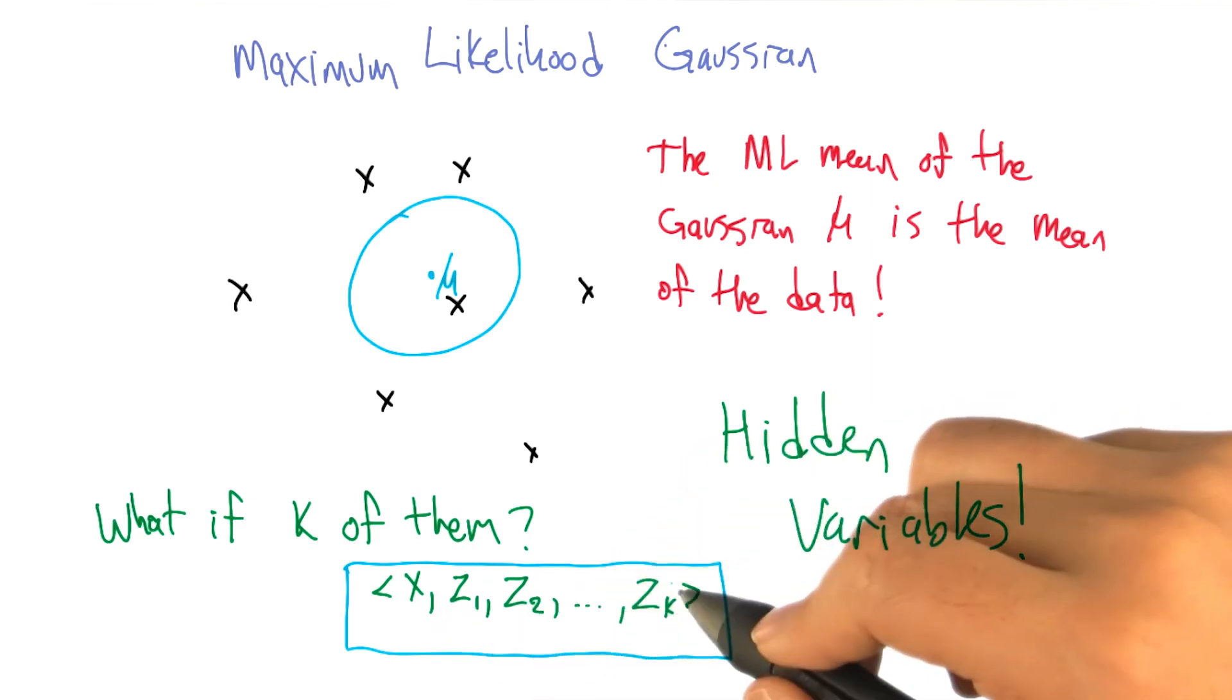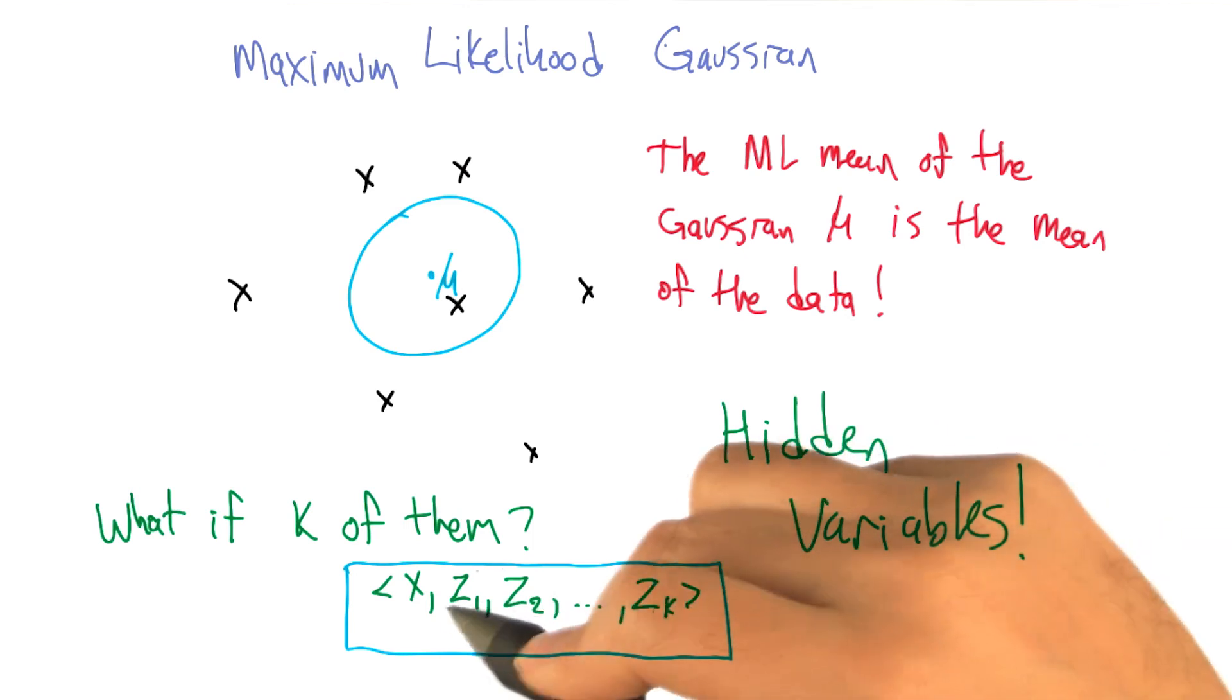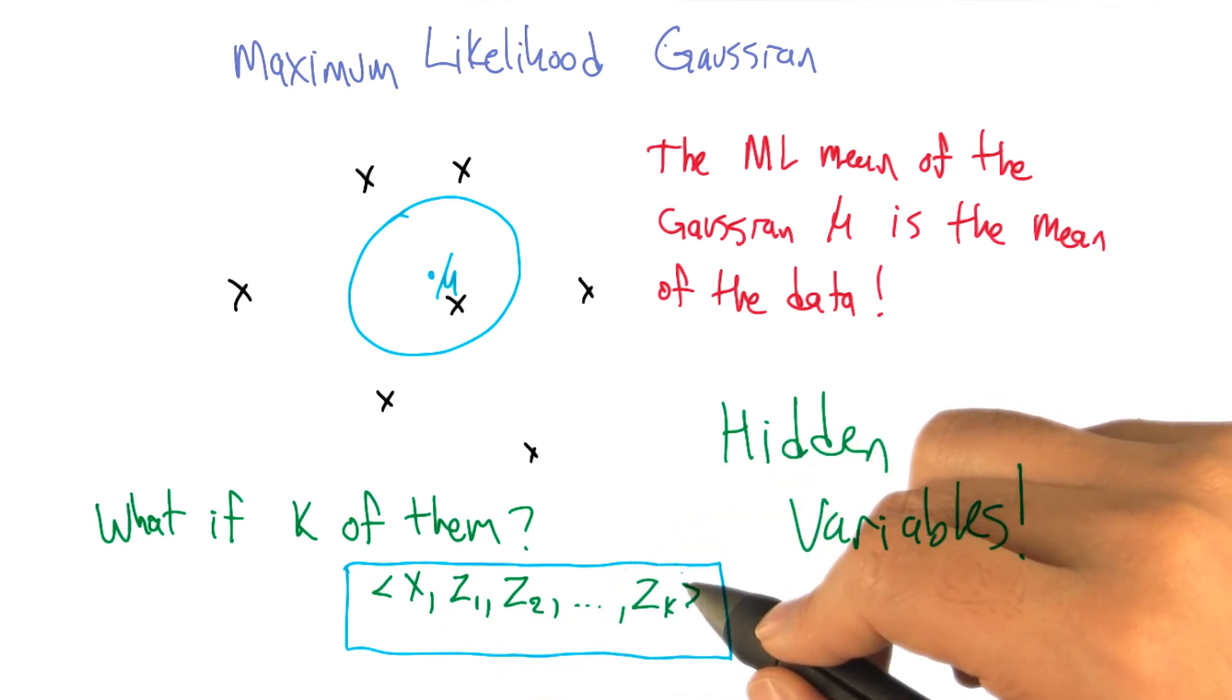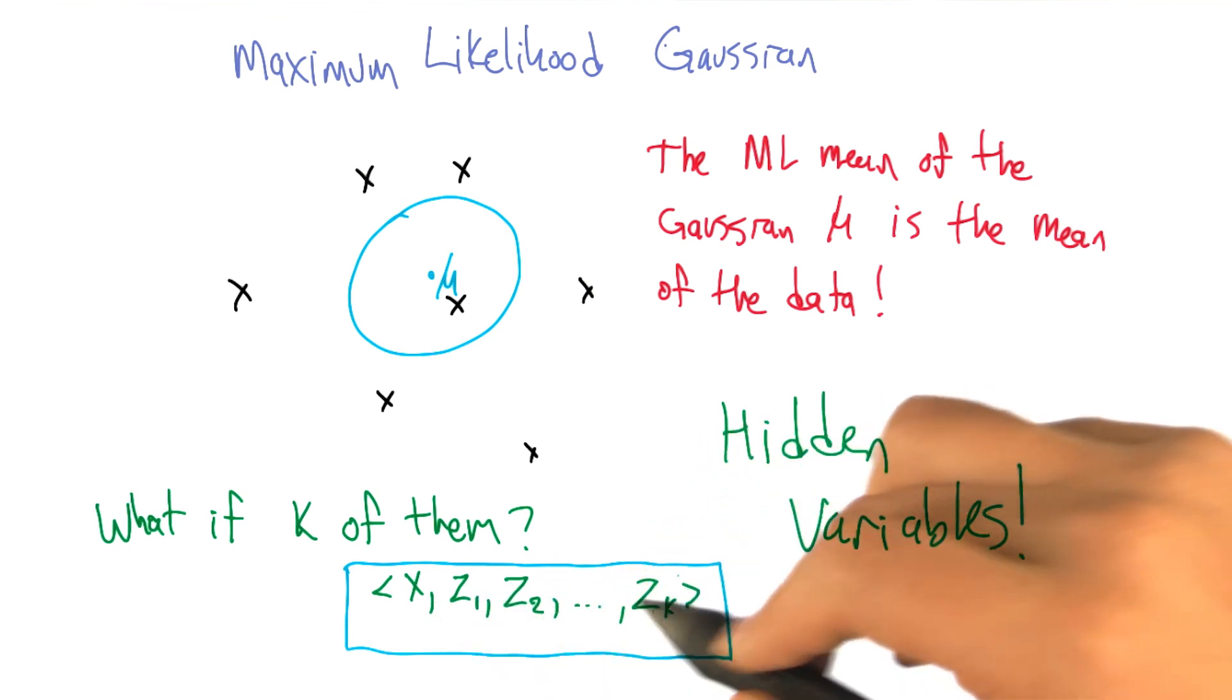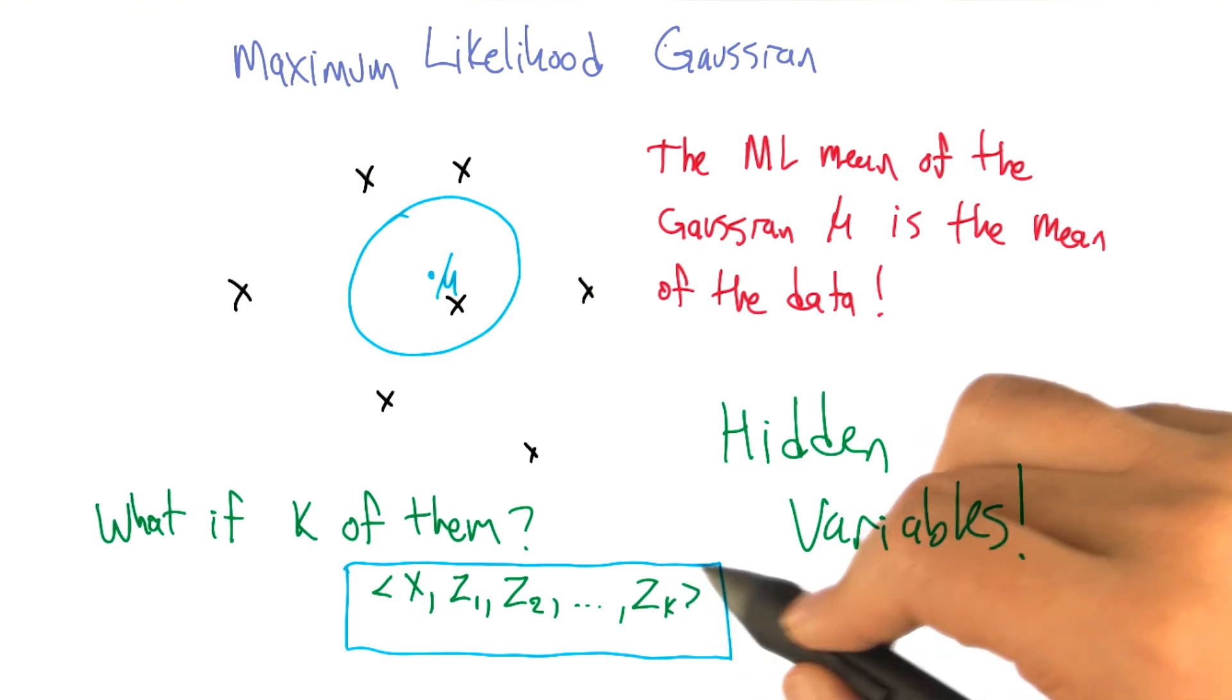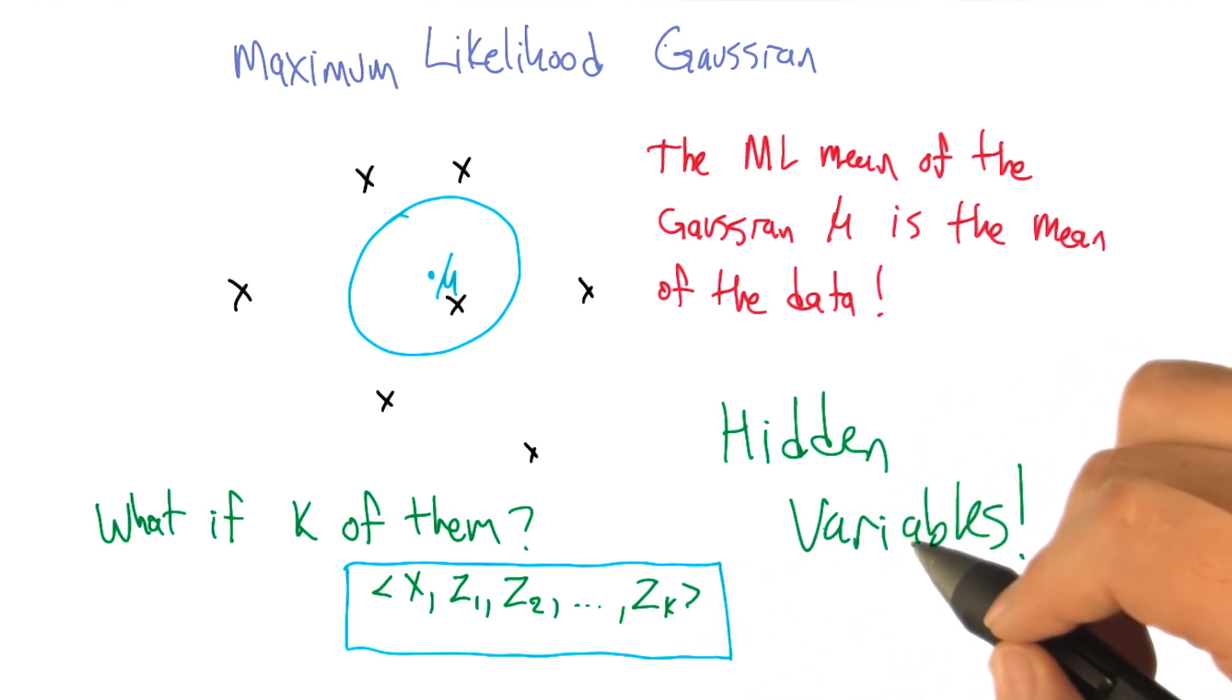Now, of course, if we knew that, that would be really useful information. We're going to have to do some inference to figure out what those values are. But the concept is that by adding these extra hidden variables in, it really kind of breaks up the problem in a convenient way.